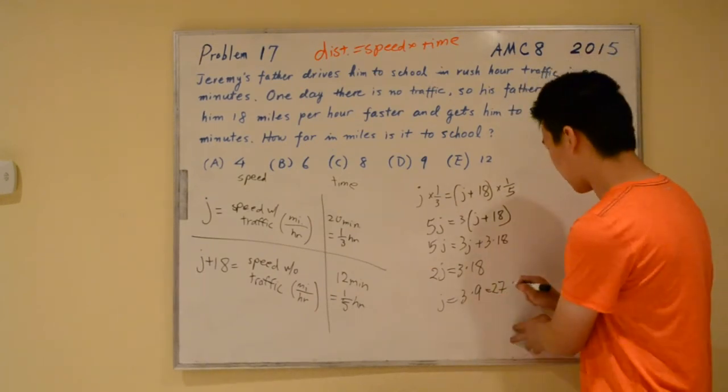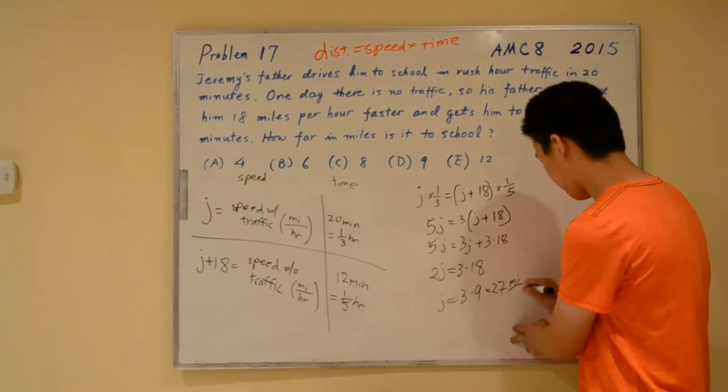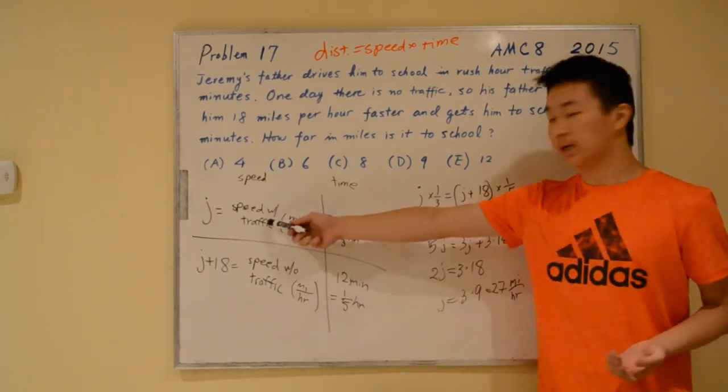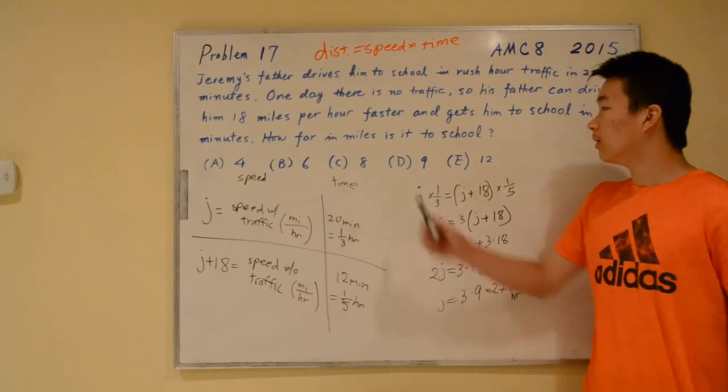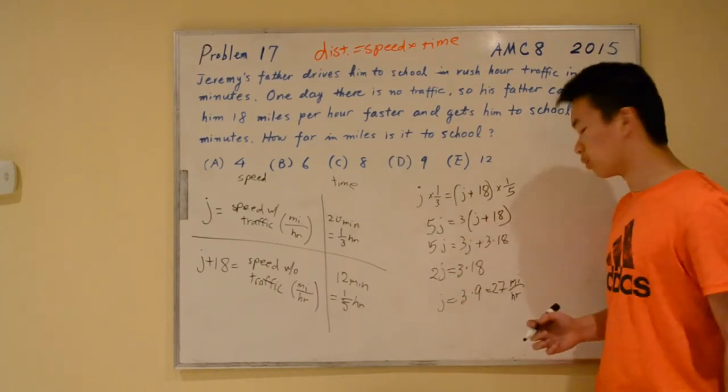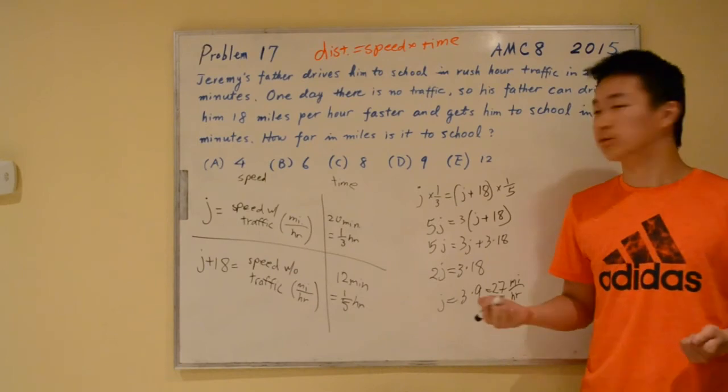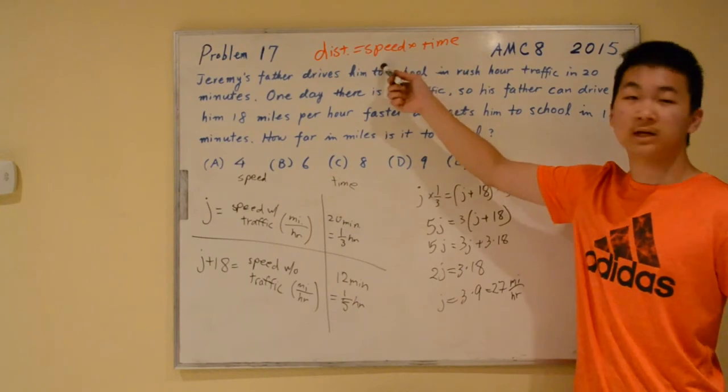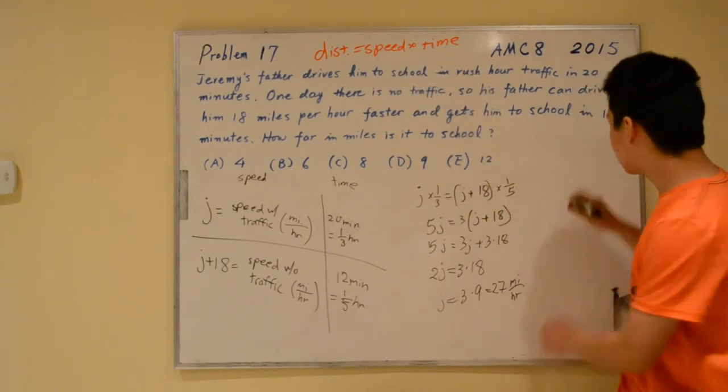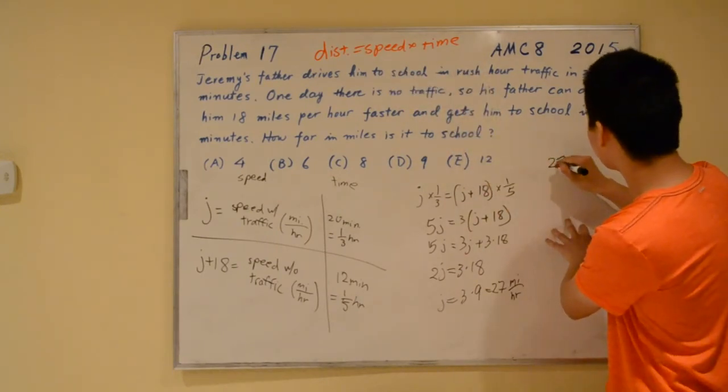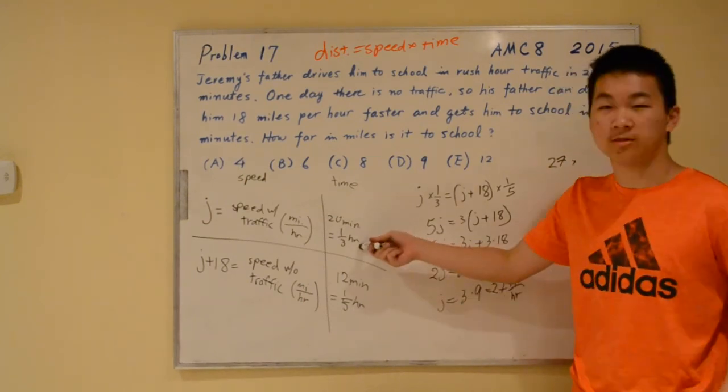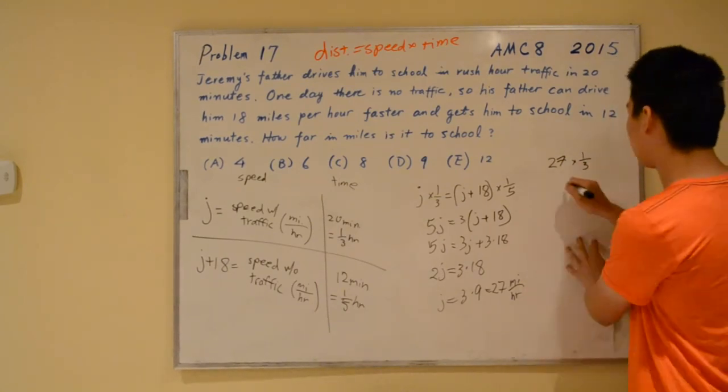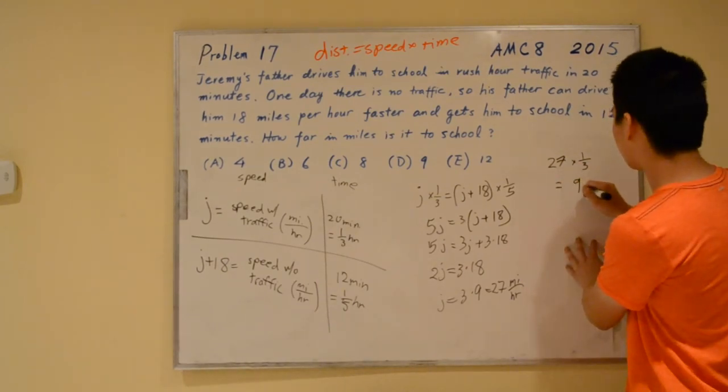Again, this is in miles per hour. Now we have found j, which is the speed with traffic. However, because we are looking for the distance to the school, we need to convert this into distance. How do we convert it to distance? We look at the formula. We want to multiply the speed by the time. The speed is 27. What is the time? The time is 1 third of an hour. So we multiply this by 1 third, and this ends up as 9 miles.